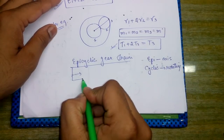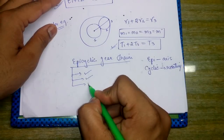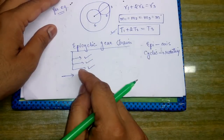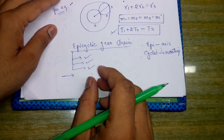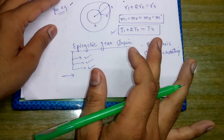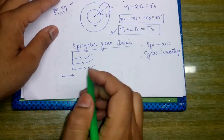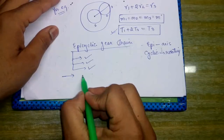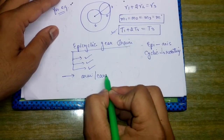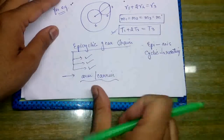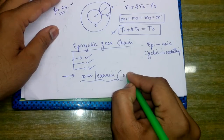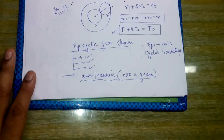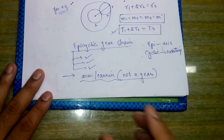Epicyclic gear trains are classified into three types: simple, compound, and reverted. Important features include that it can create infinite velocity ratios. To rotate the axis of the gear, a link is used which is called the arm or carrier. The arm or carrier is not a gear itself; it is simply a link used to rotate the axis of a gear.